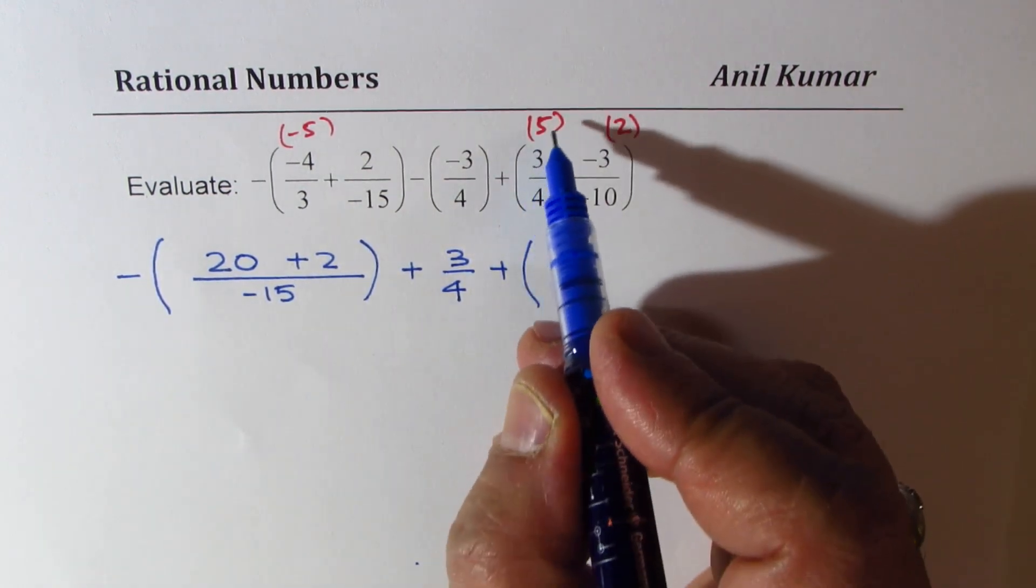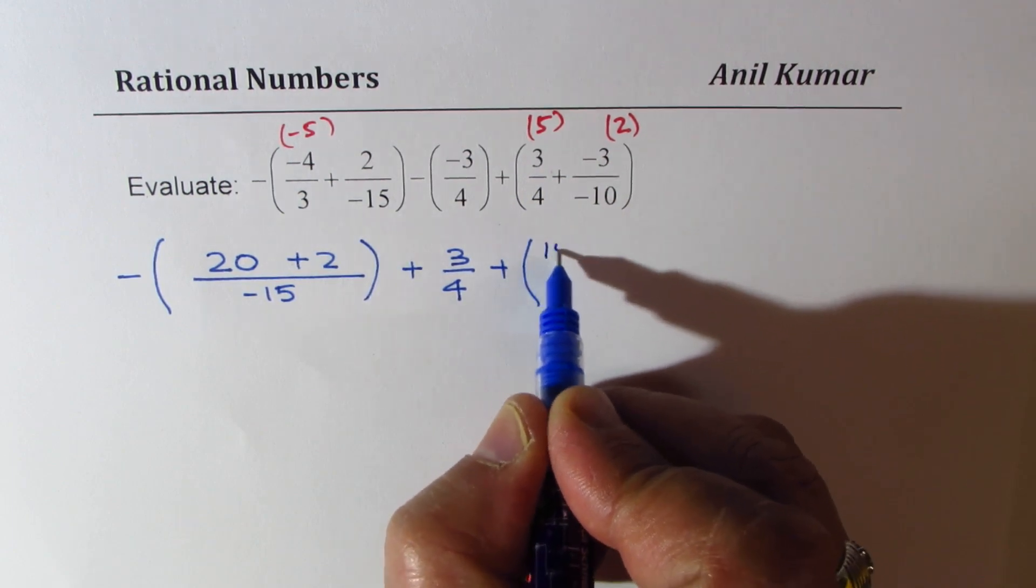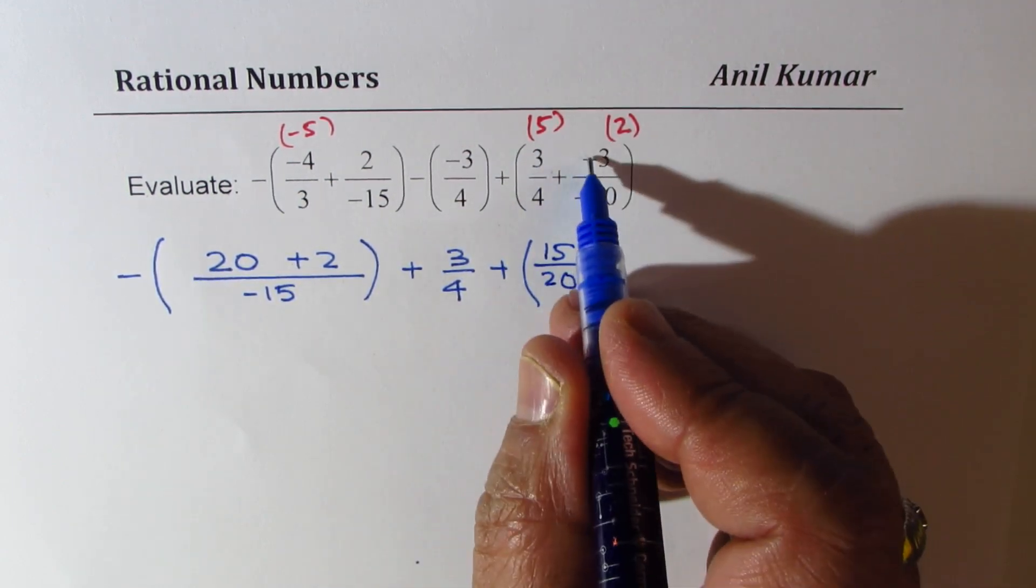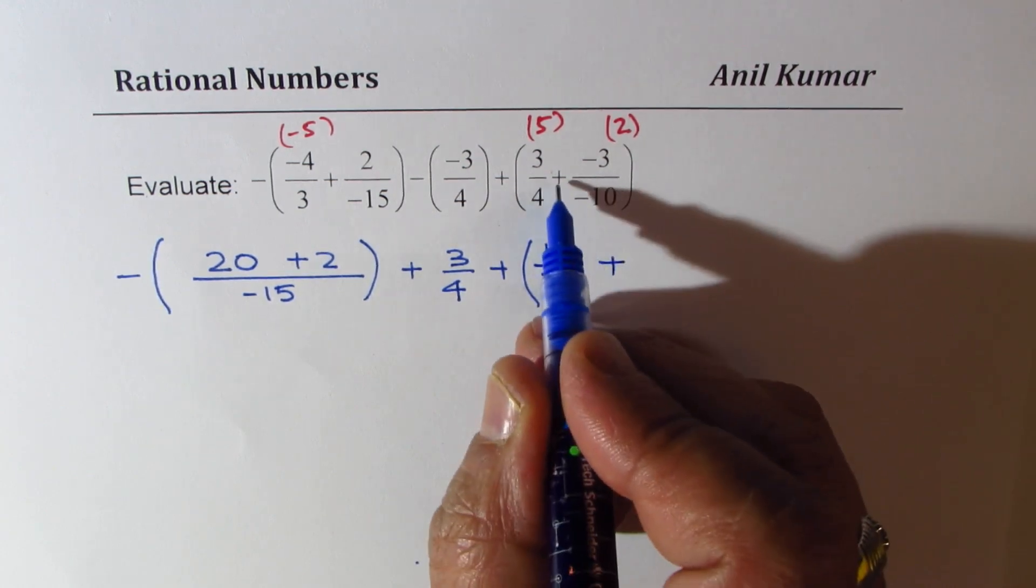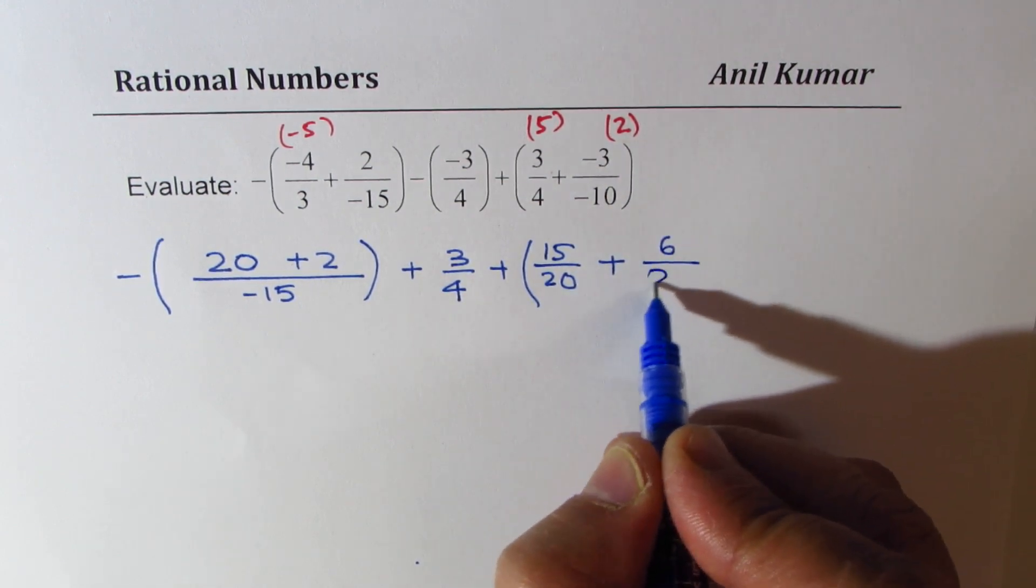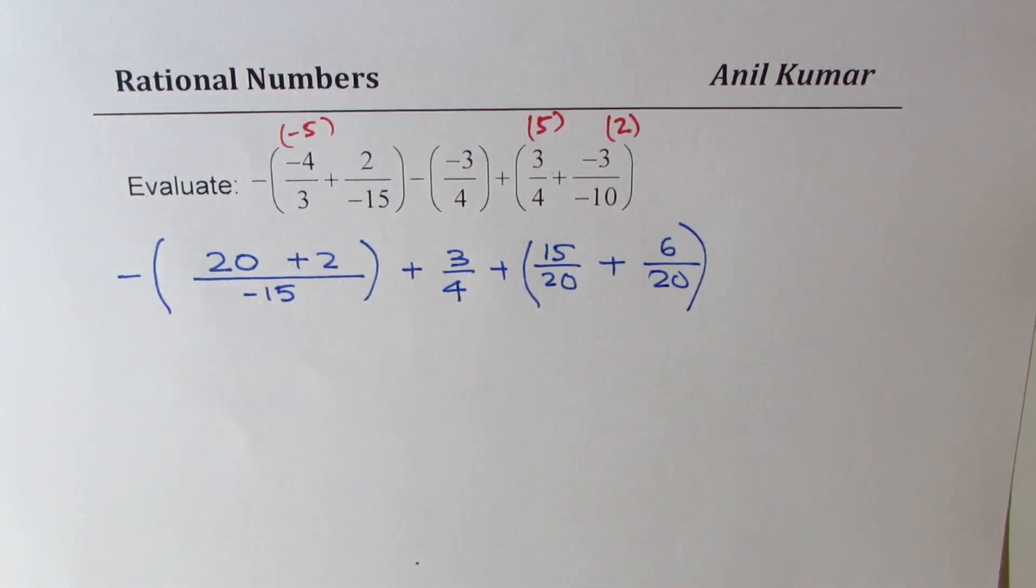Minus and minus makes it positive, correct? You have to find the common denominator. Common denominator is 20. So, to make 20, I will multiply both of them, the first numbers, by 5, and second numbers by 2, correct? So, what I get here, 5 times 3, 15, and 5 times 4 is 20. Minus and minus becomes positive, already positive. 3 times 2, 6, and 10 times 2, 20. Does it make sense, correct?